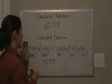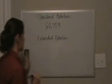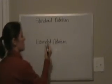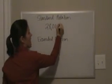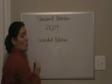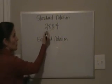Let's work one more. Let's try 28,014. I want to draw your attention to the zero in the middle. Our 2, again, is in the 10,000th place.